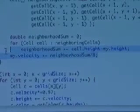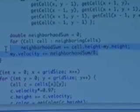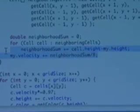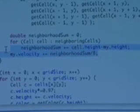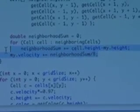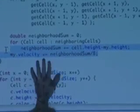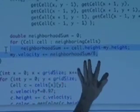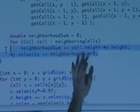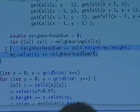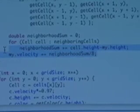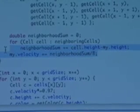So if we're at the same height, then it's going to be 0. If all the cells are the same height, then it's going to be 0. But if there's a difference, it's going to be the sum of the differences. And then my velocity is increased by the neighborhood sum divided by 8, so the average of the neighborhood. So what does this mean? What is this going to do?